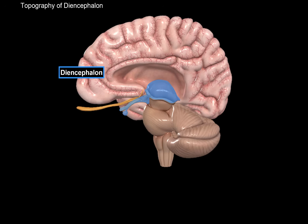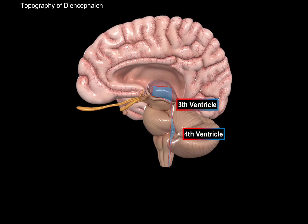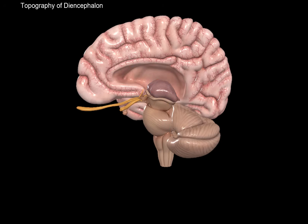Let's revisit the ventricular system. The fourth ventricle continues down as the central canal, and continues upwards as the aqueduct of the midbrain, which leads into the third ventricle. The diencephalon surrounds the third ventricle. Just above the third ventricle, on either side, we have the lateral ventricles. The diencephalon's job is to connect different parts of the telencephalon with the brainstem.